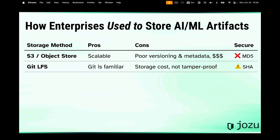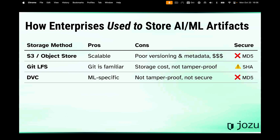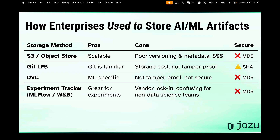Git LFS — Git is nice and familiar, but its storage cost is very high and it's not really tamper-proof for the artifact itself, just the pointer. DVC is ML-specific, but it's also not tamper-proof — it's honestly kind of the same as Git, except not even as good because it doesn't use SHA; it uses MD5. Experiment trackers — everybody's got those and they are necessary and great — but whether you're using MLflow, Kubeflow, Weights & Biases, you take your pick, you have some amount of lock-in. The UI makes a lot of sense for data science teams but can be very confusing for DevOps teams. In the middle of a production incident, that is not when you want broken communication at 3 a.m. with DevOps teams trying to figure out what was the last good version before the one that just broke in production.